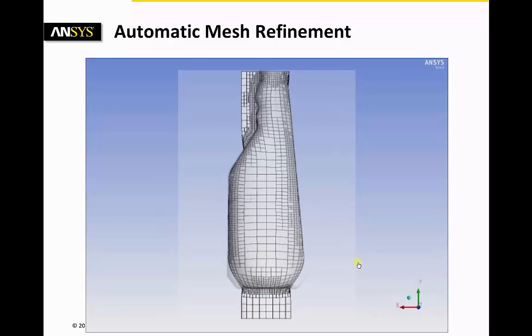Bottle shapes are typically complex and may contain features that are relevant to the bottle use and maybe even its structural behavior. Automatic mesh adaption offers an efficient way to capture these features.